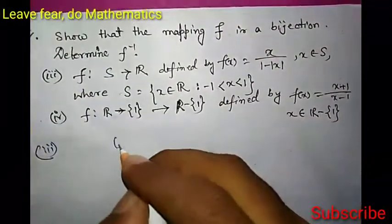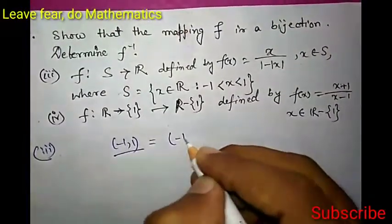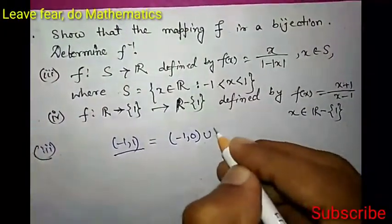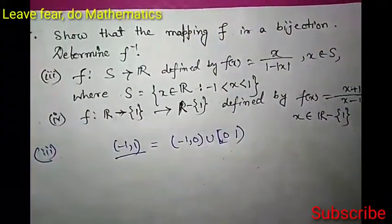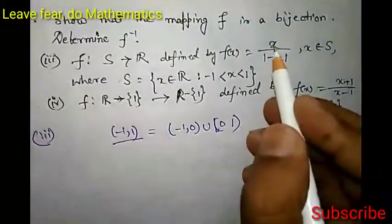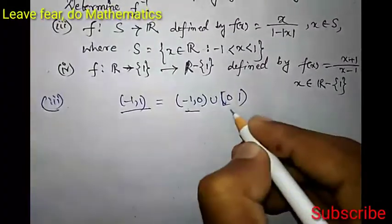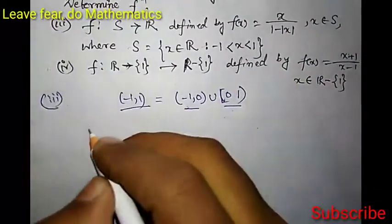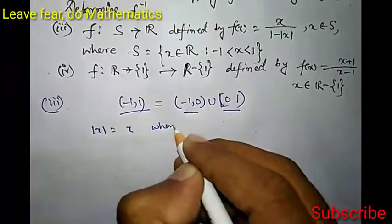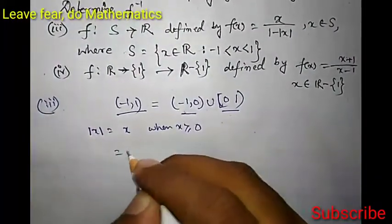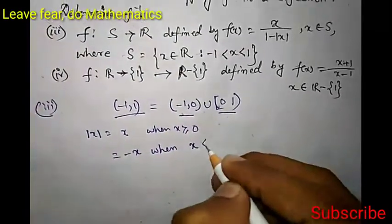The domain is the open interval (-1, 1). We can divide the domain in two parts: (-1, 0) union (0, 1). The function is defined by x over 1 minus mod x. Sometimes x is less than 0 and sometimes x is greater than 0. The definition of mod x is: mod x equals x when x is greater than or equal to 0, and minus x when x is less than 0.